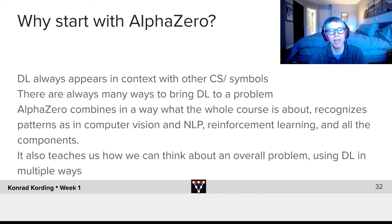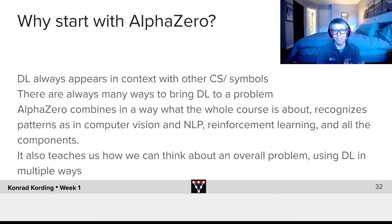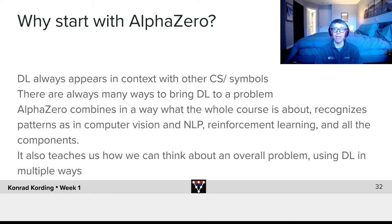So why do we start with Alpha Zero? Deep learning always appears in the context with other computer science ideas such as symbols. In the case of Alpha Zero, we have deep learning, but deep learning is part of the problem. We will see that the deep learning is embedded in a system that does planning. We will see that deep learning can be formulated in many different ways — there are many ways of bringing deep learning to the problem, and Alpha Zero is a very clever way of bringing deep learning to the problem of game playing.